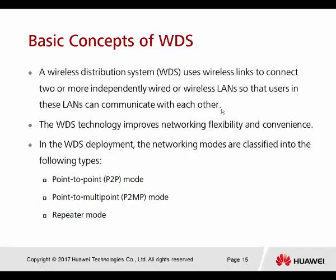A wireless distribution system — WDS for short — uses wireless links to connect two or more independently wired or wireless LANs so that users in each LAN can communicate with each other. They form wireless bridging to hook up wireless devices together without using any LAN cable, improving networking flexibility and convenience. In WDS, the networking modes are classified into three types: point-to-point, point-to-multipoint, and repeated mode.